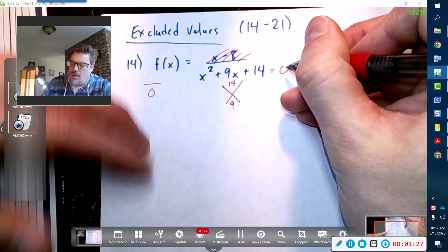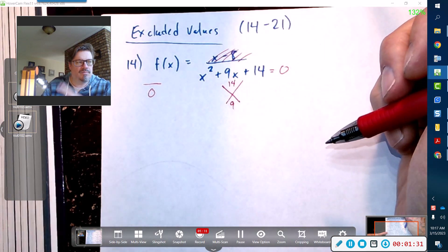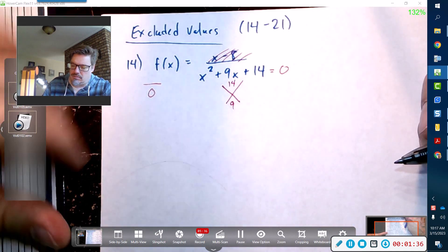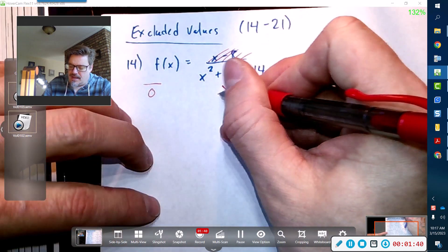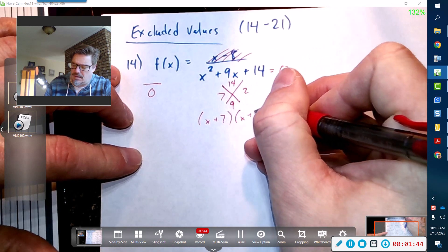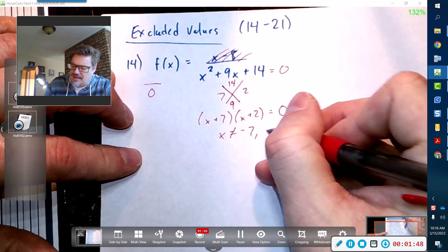What we got to do is figure out the values that would make this quadratic in the denominator equal zero. We spent a lot of time solving these two units ago. Factors of 14 that add up to 9 are actually 7—I think we already did this one, didn't we? So excluded values: x cannot equal negative 7 nor negative 2.